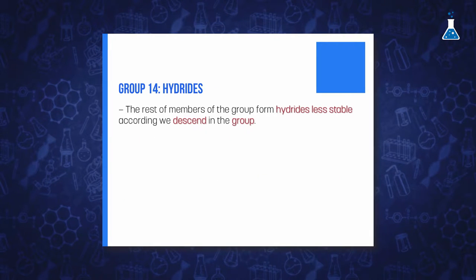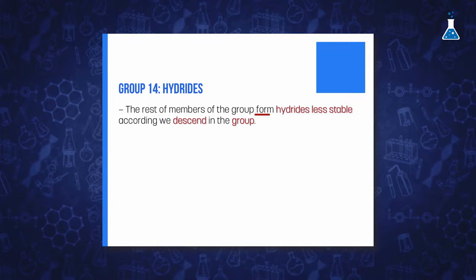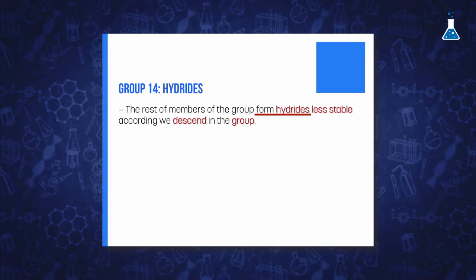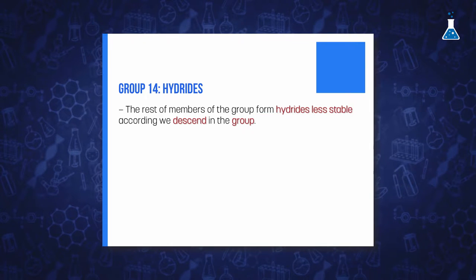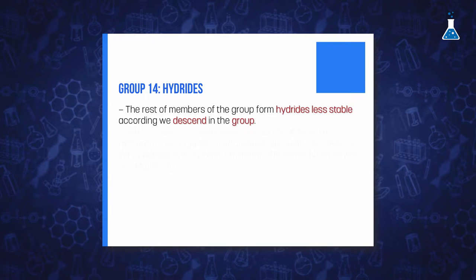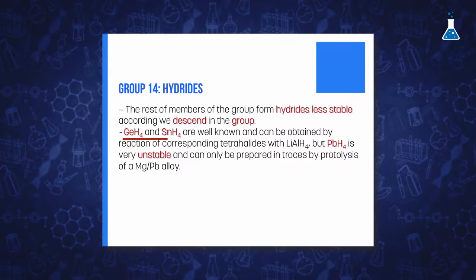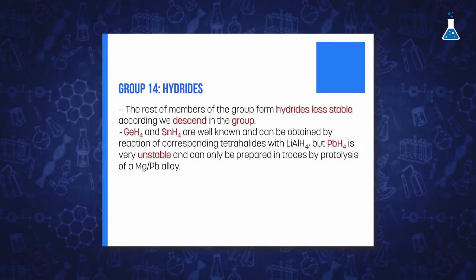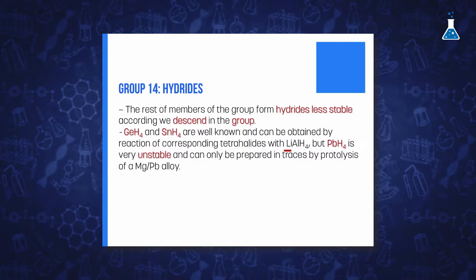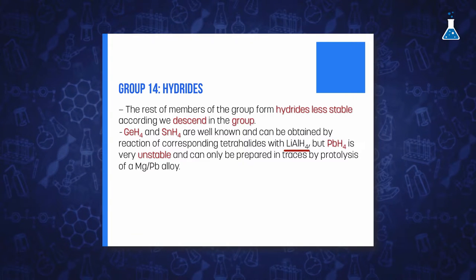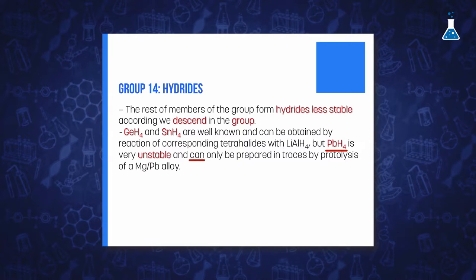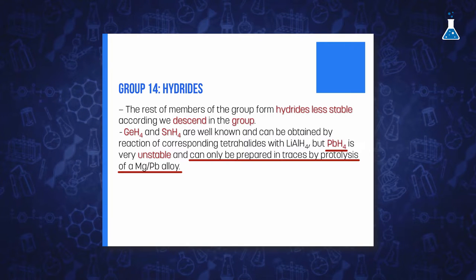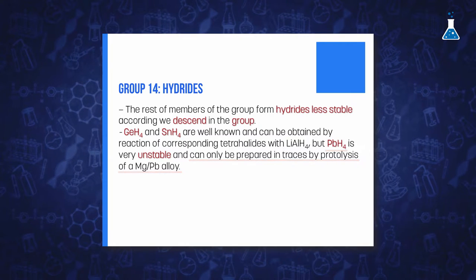With respect to the rest of the elements of the group, they are also able to form hydrides, but the stability of these compounds decreases on going down the group, and that limits the chemical accessibility of stannane and plumbane. Germane and stannane can be prepared in tetrahydrofuran solution by the reaction of the corresponding tetrachloride with lithium aluminum hydride. However, plumbane can be prepared in tetrahydrofuran solution by the protolysis of a magnesium–lead alloy, being extremely unstable.